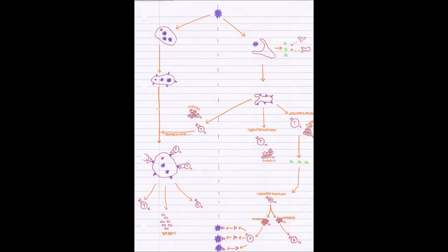This T-lymphocyte will then divide into three different types of cell: T-helper lymphocytes, T-memory lymphocytes, and T-killer lymphocytes. T-killer lymphocytes we come back to later with the cell-mediated response. The T-memory cells will replicate by mitosis, giving loads of T-memory cells floating around in the blood. These T-memory cells have the complementary antibody to the antigen and wait for the next time this pathogen is encountered — they are used in the next secondary specific immune response.